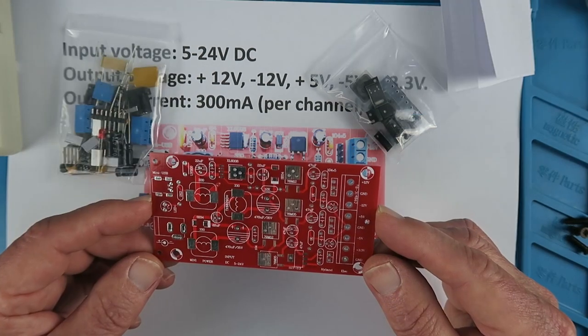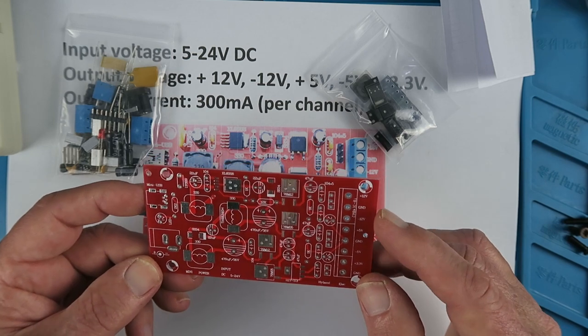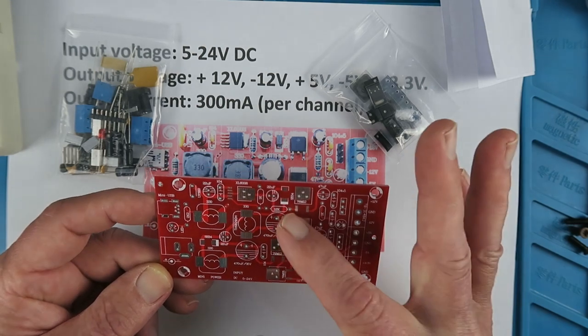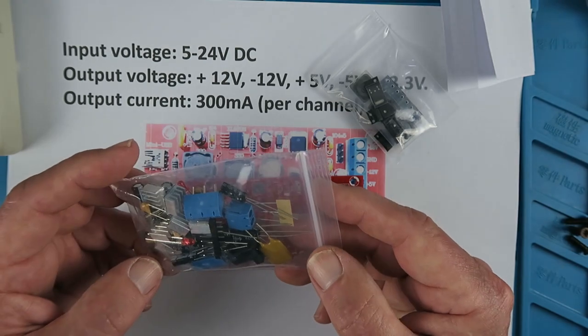The normal practice I use when building these kits is to fit the lowest profile components first, which in this case are going to be the little resistors. Without further ado, let's get those resistors soldered in place.